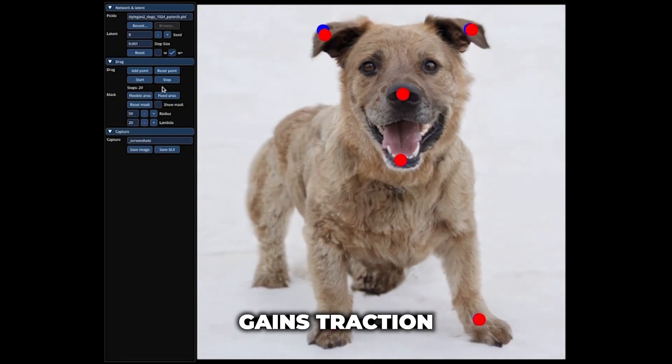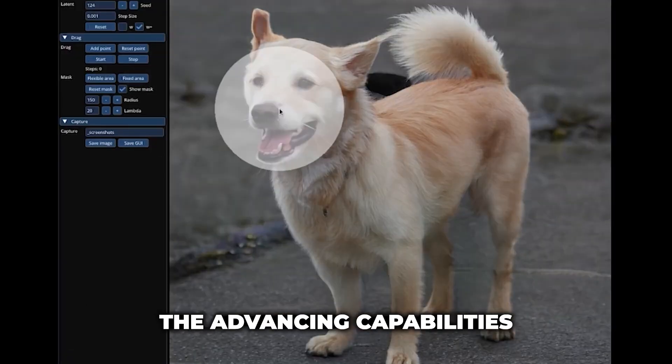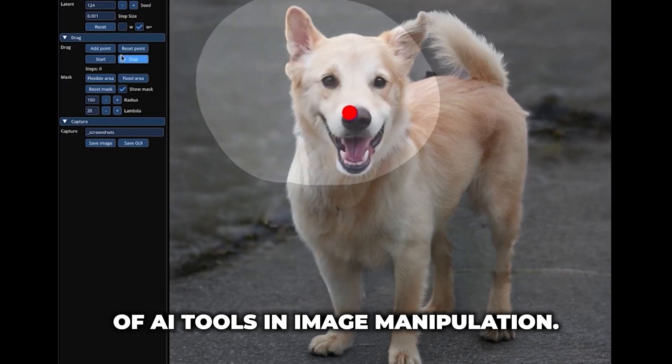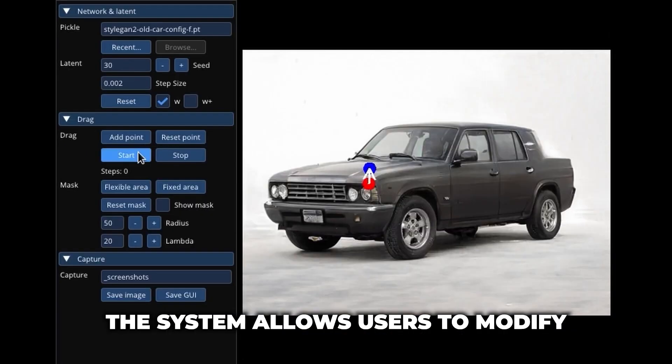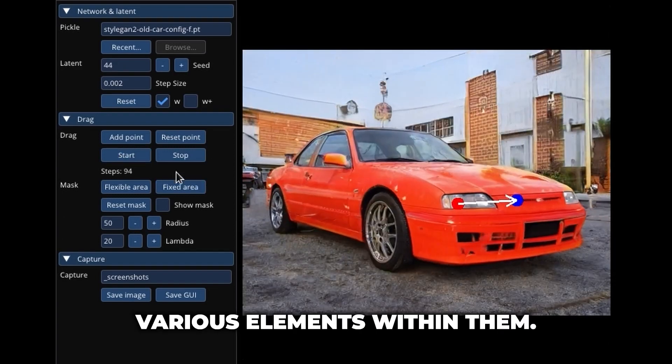a new AI technology gains traction as a research paper introduces a novel system called Dragan, which demonstrates the advanced capabilities of AI tools in image manipulation. The system allows users to modify images by simply dragging and manipulating various elements within them.